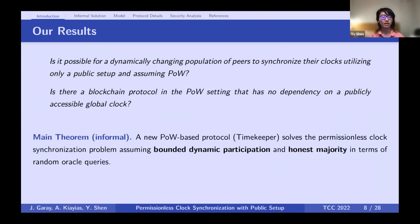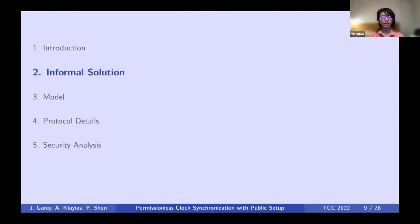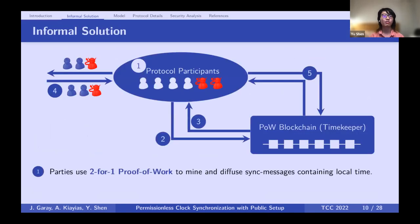We provide a positive answer to both questions. We present the first proof-of-work based protocol, which we call Timekeeper. This protocol solves the permissionless clock synchronization problem. We can achieve precision and accuracy by assuming bounded dynamic participation and honest majority, defined in terms of the number of random oracle queries.